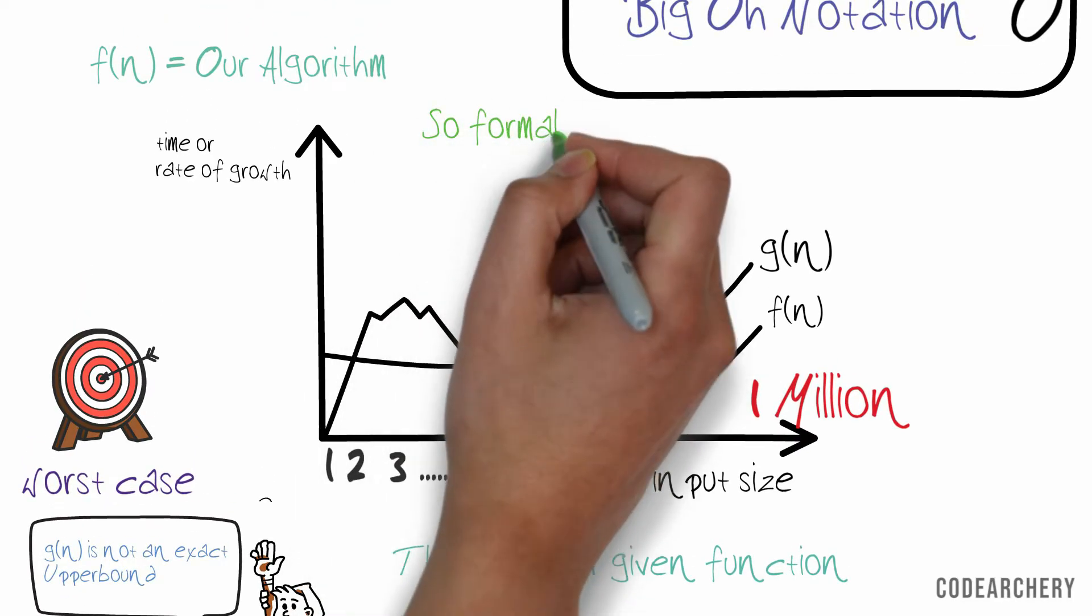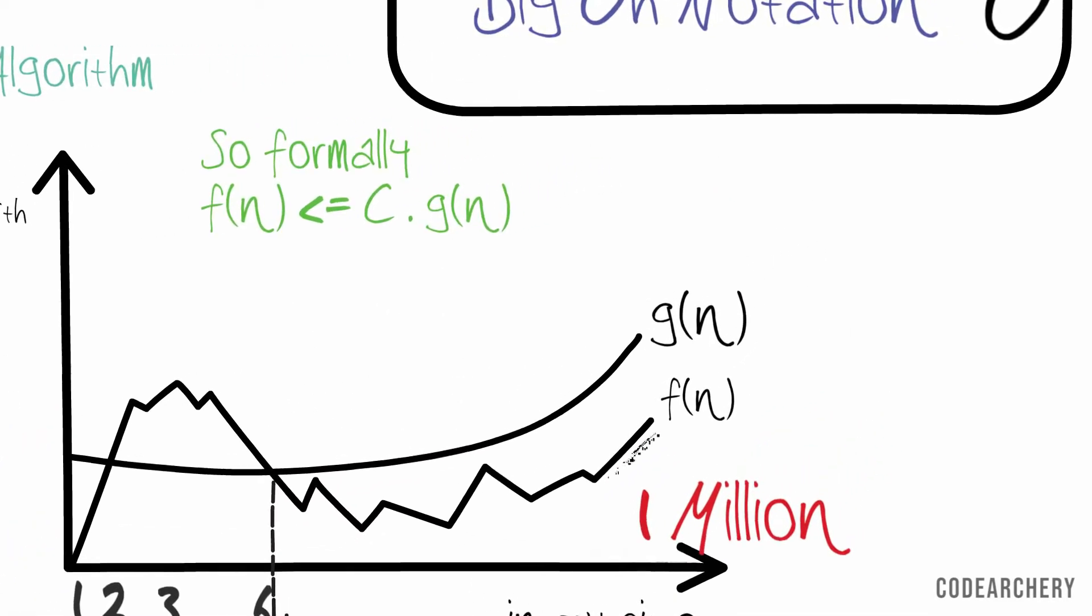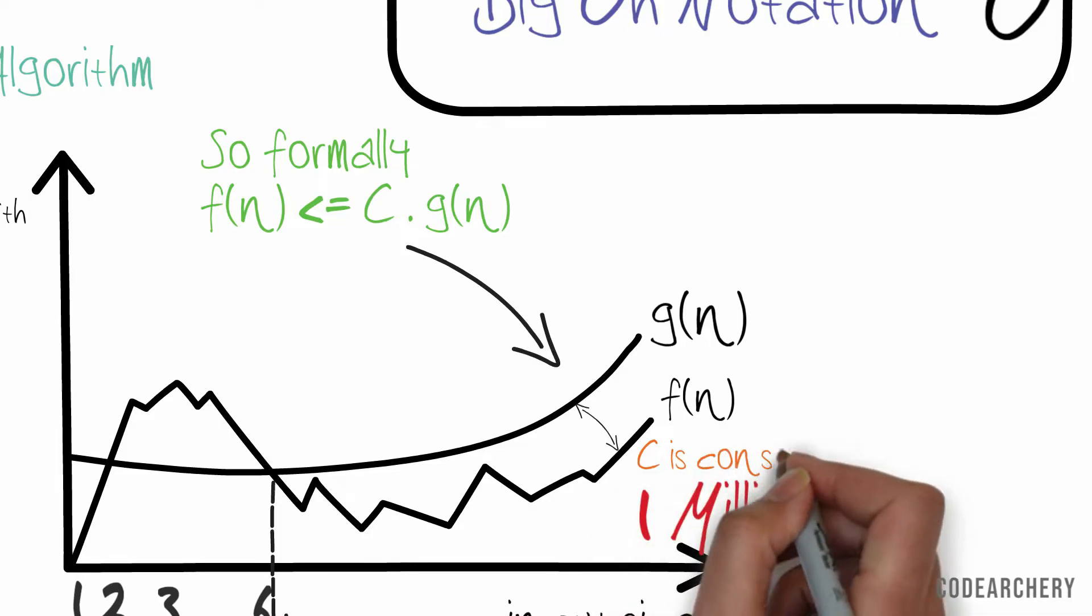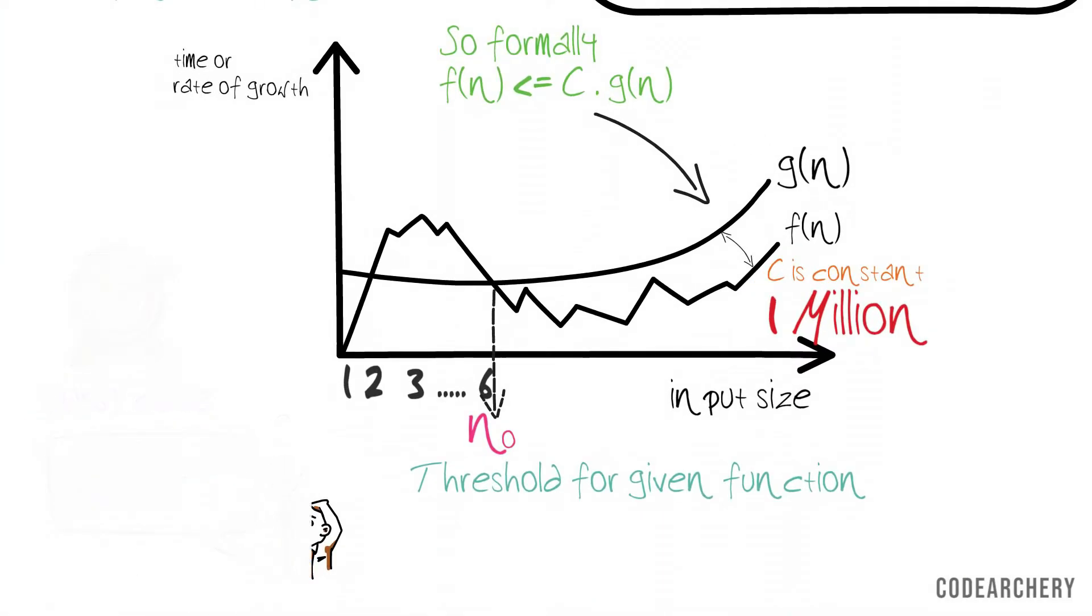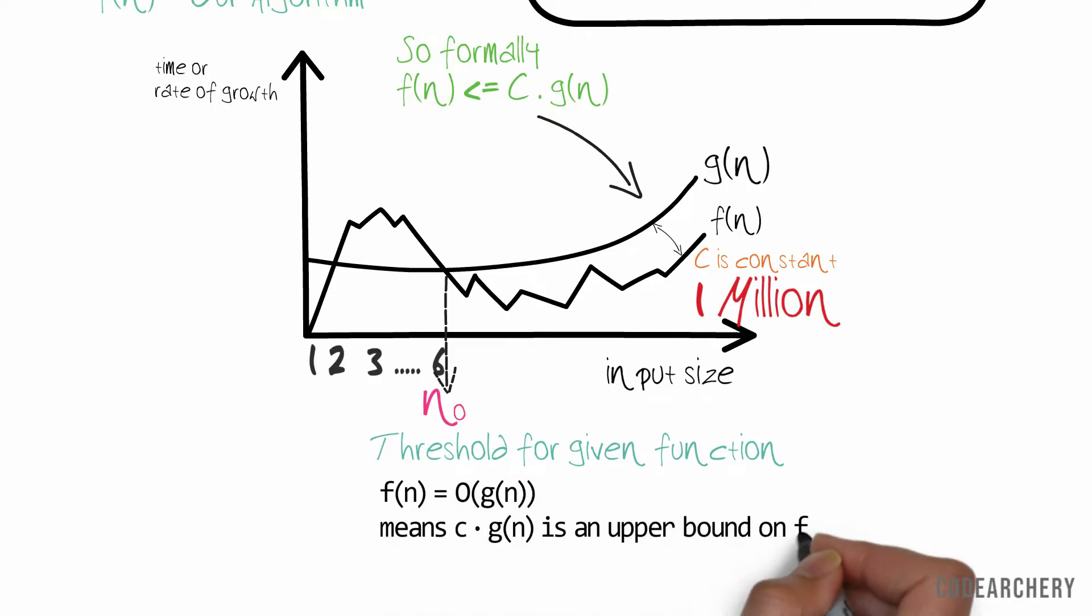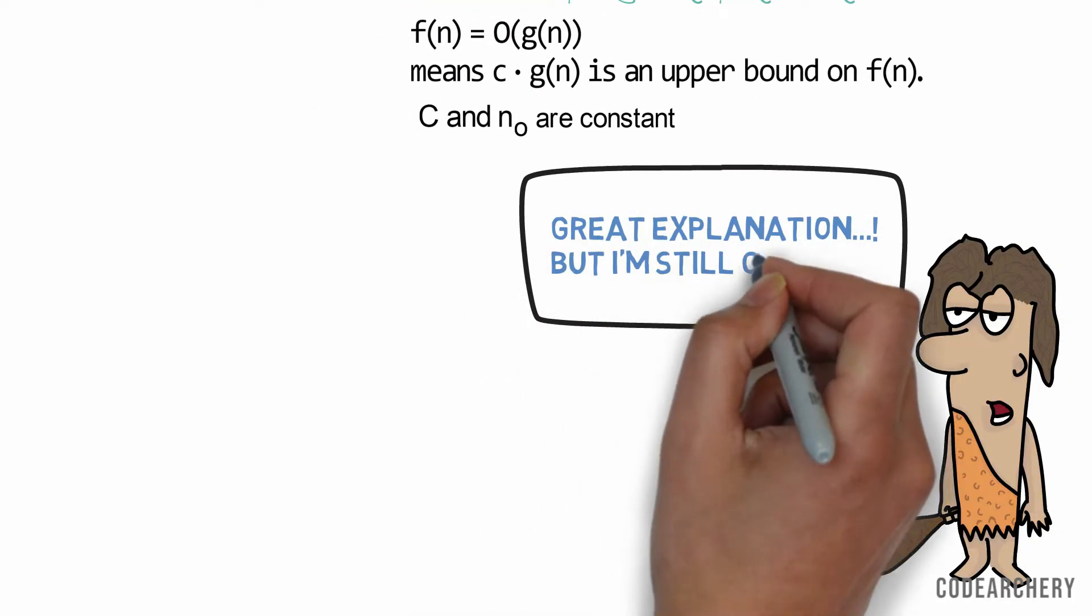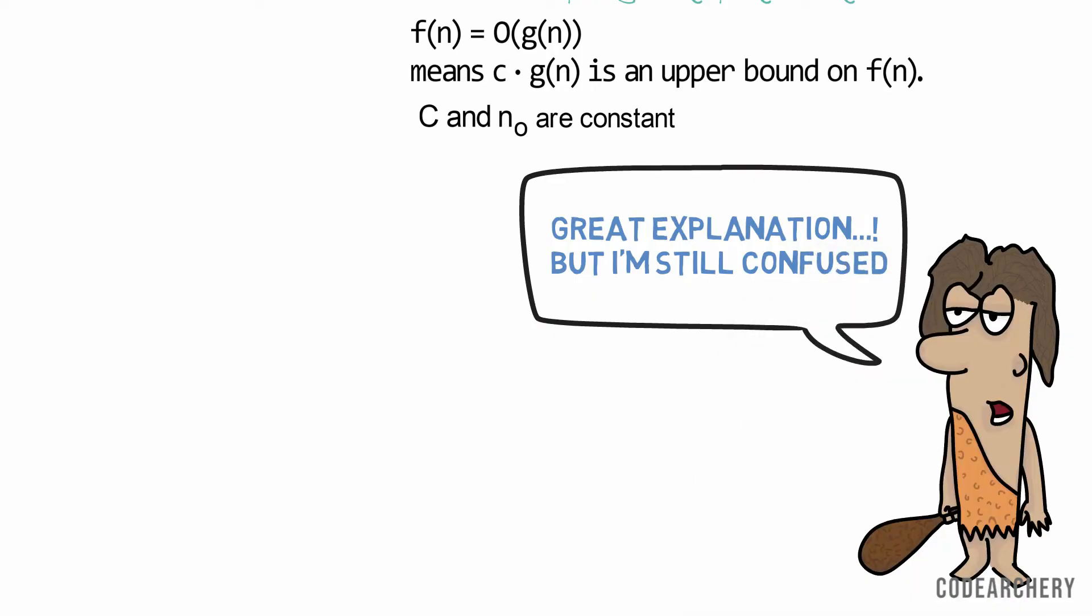So the point from which g(n) is always a bit greater than f(n) is the threshold for the given function and we represent it by n₀. So formally, f(n) is less than or equal to c times g(n). Now you will ask what is c, so c is a constant value. So the formal definition is f(n) equals Big O of g(n) where c times g(n) is the upper bound of f(n) where n₀ and c are constants. I know you might be still confused on what's going on, but we'll understand more by a practical example.